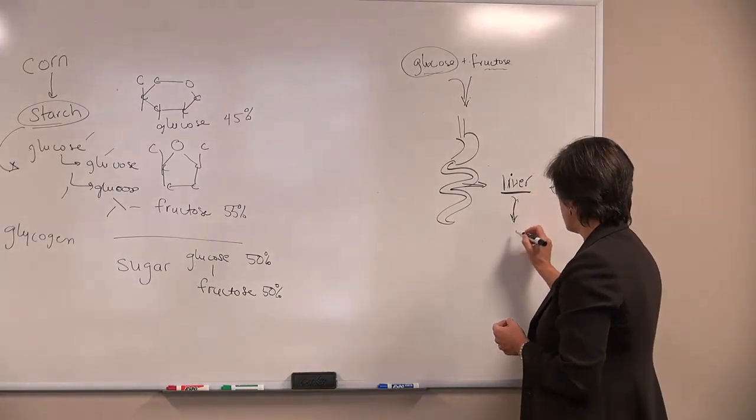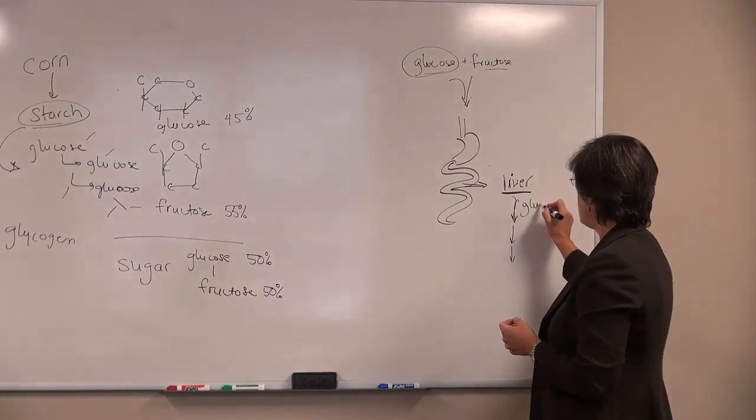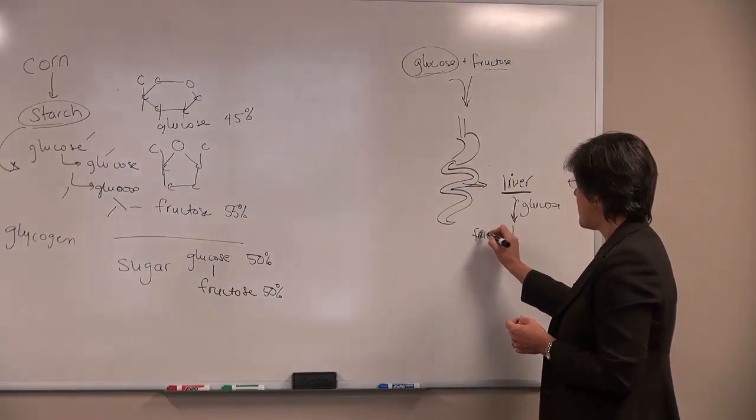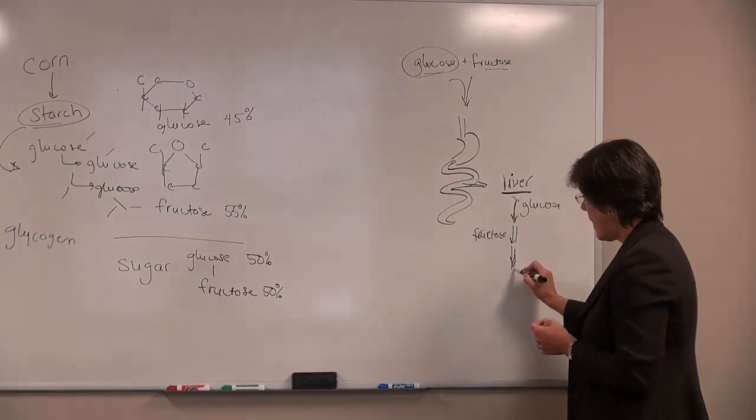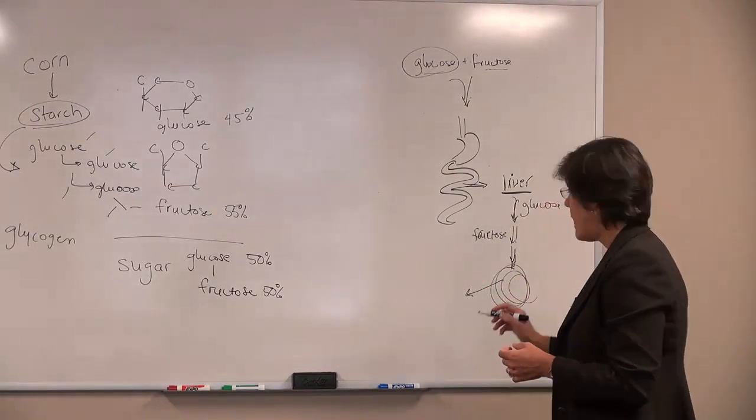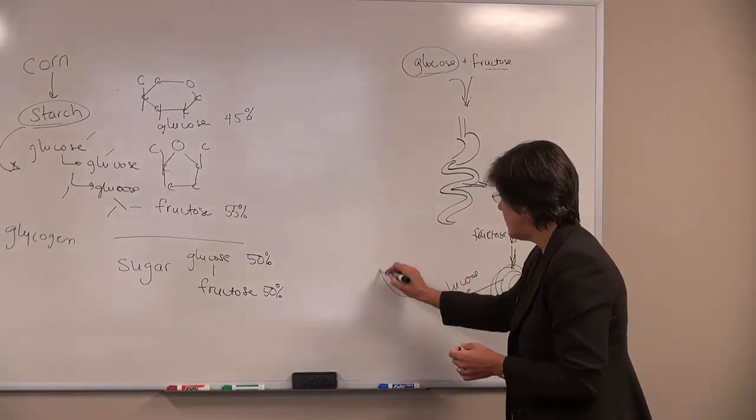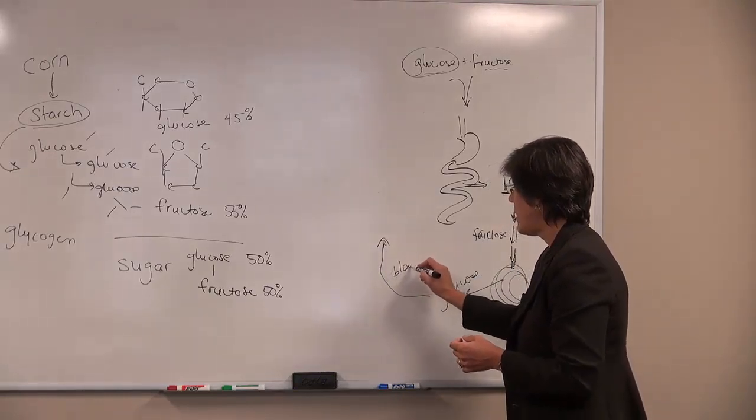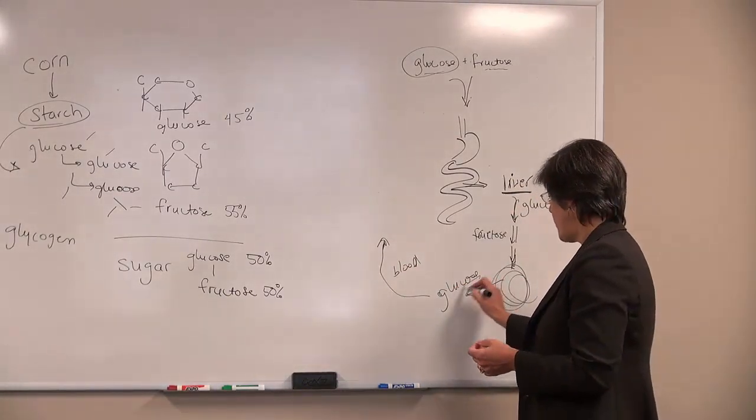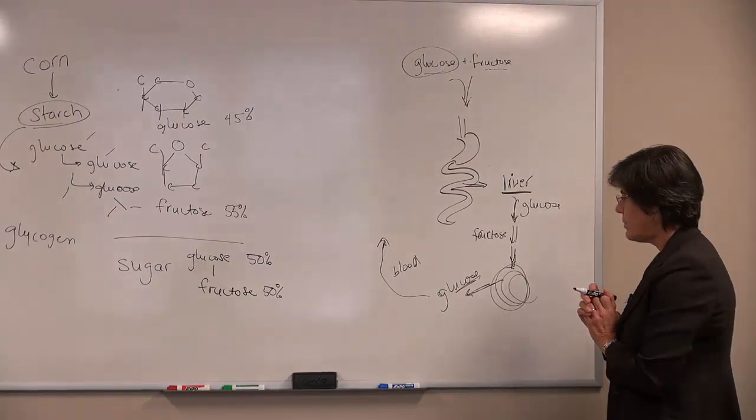So at the liver there are a series of enzymes and you can start with glucose or you can start with fructose and they enter into the same pathway and ultimately will be converted into different things. So one of the things that can happen is that the glucose can be released out into the blood and circulate around to the various tissues of the body and used for energy. So a majority of the glucose that we consume ends up being used by the rest of the body.